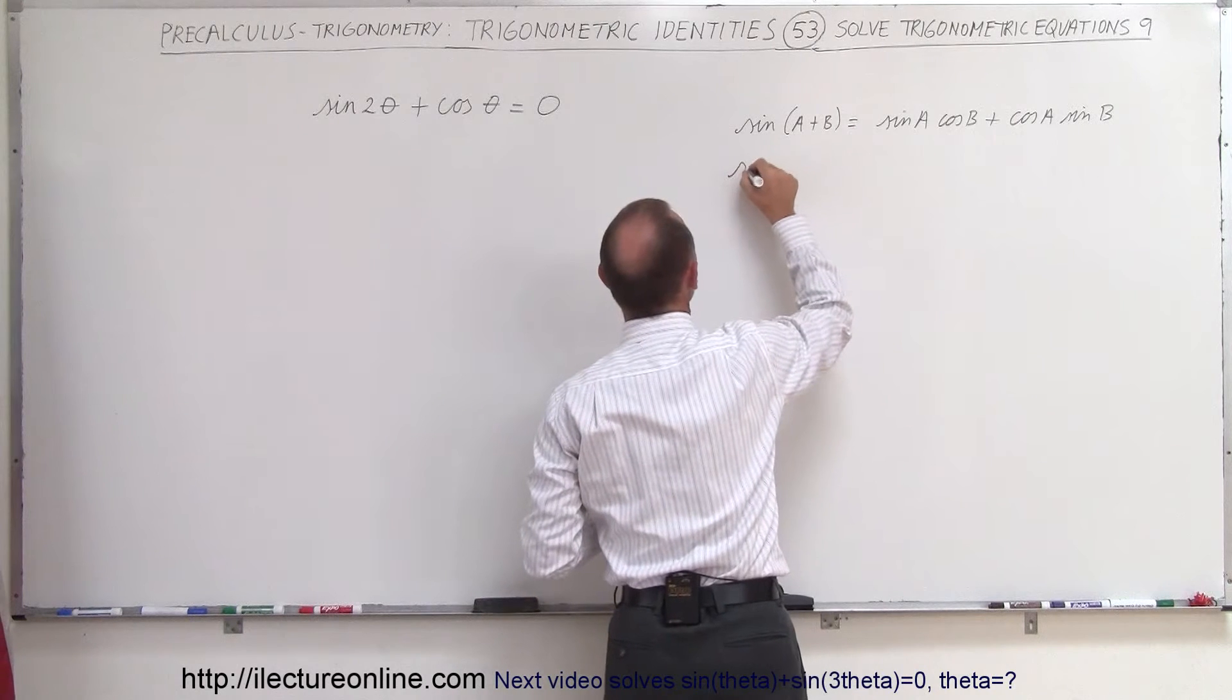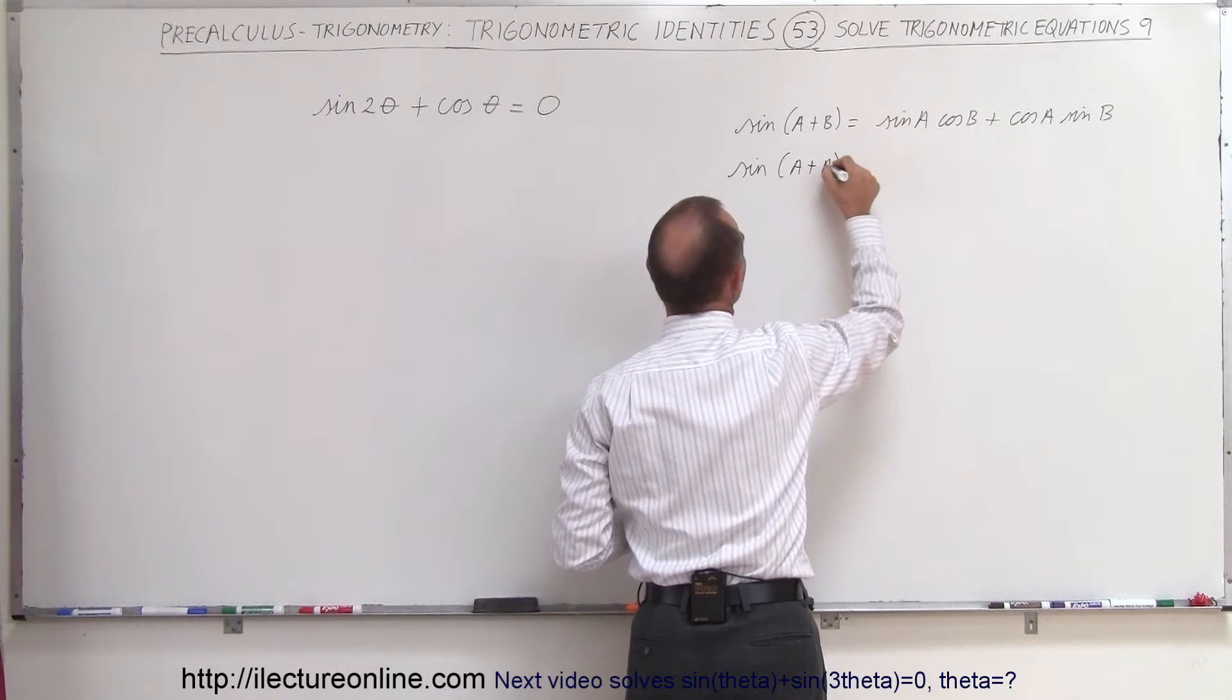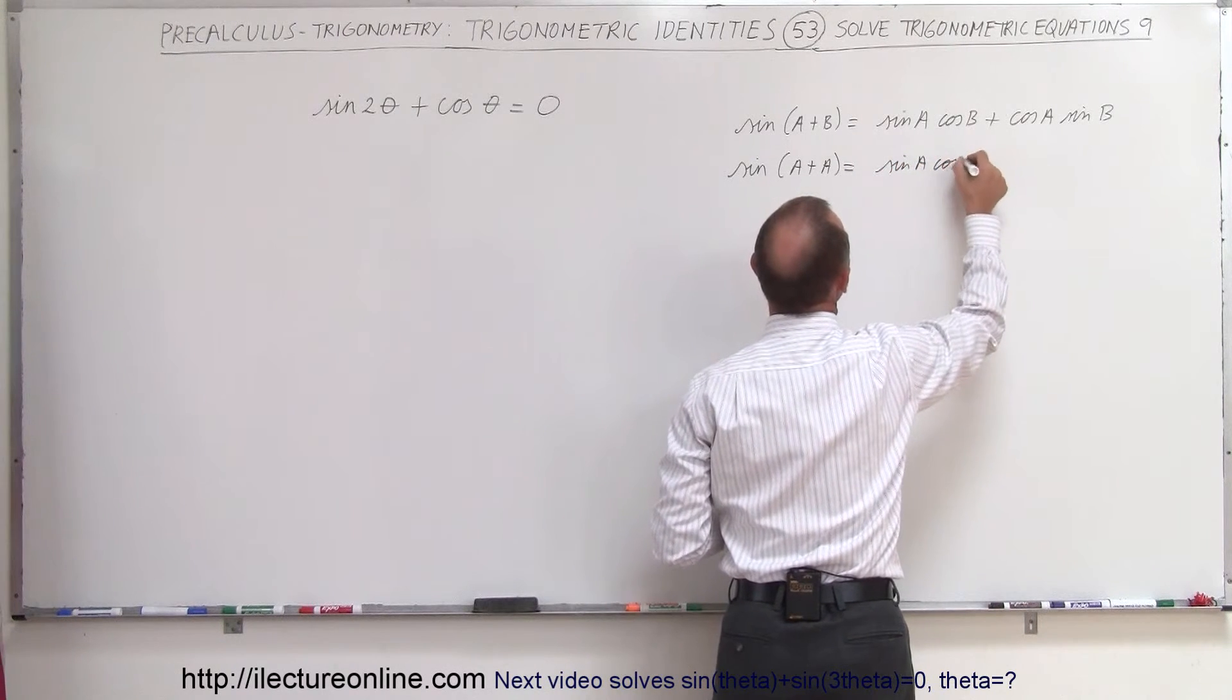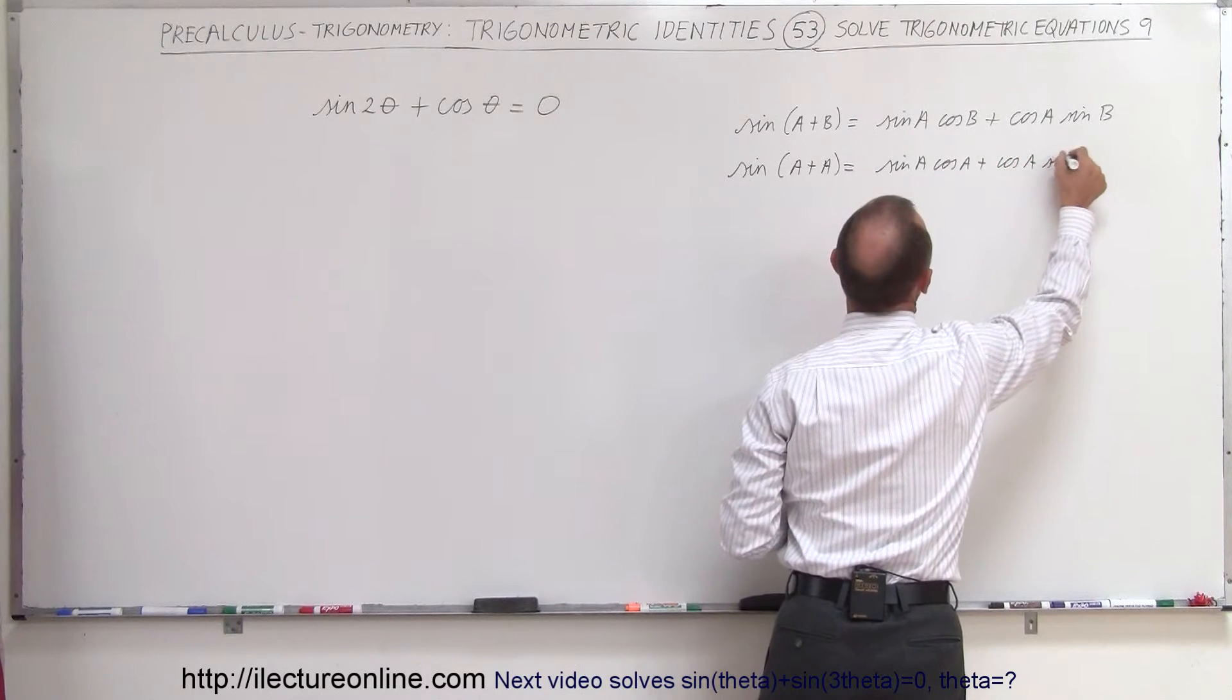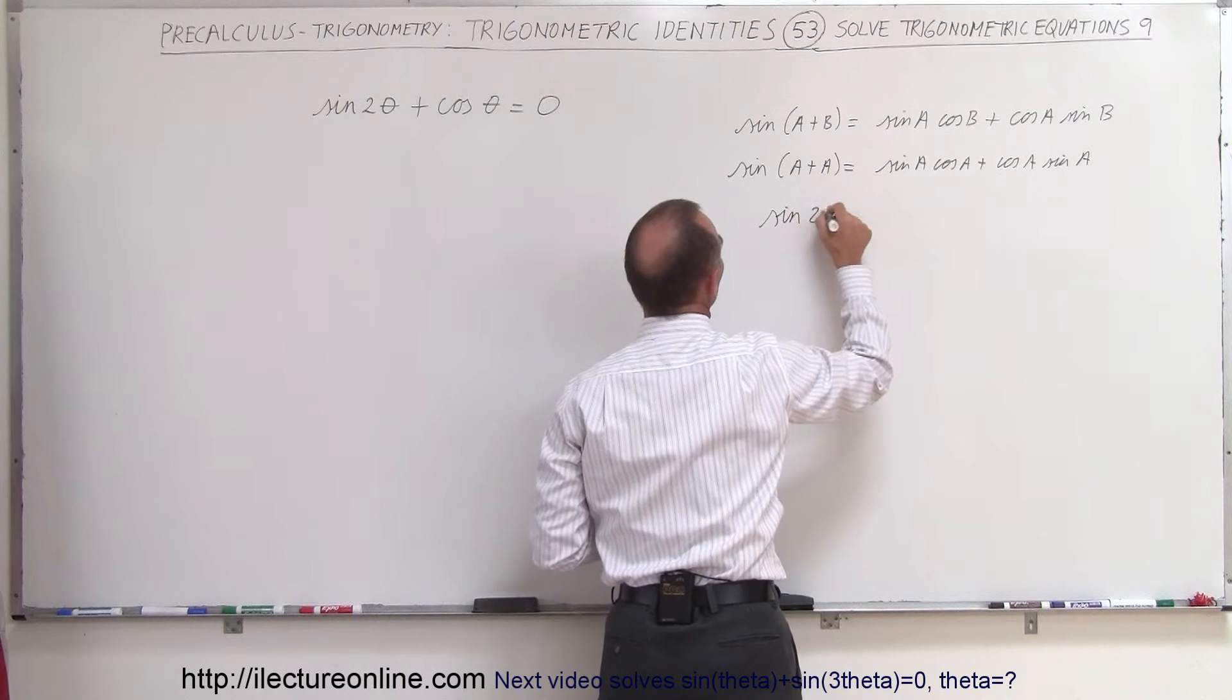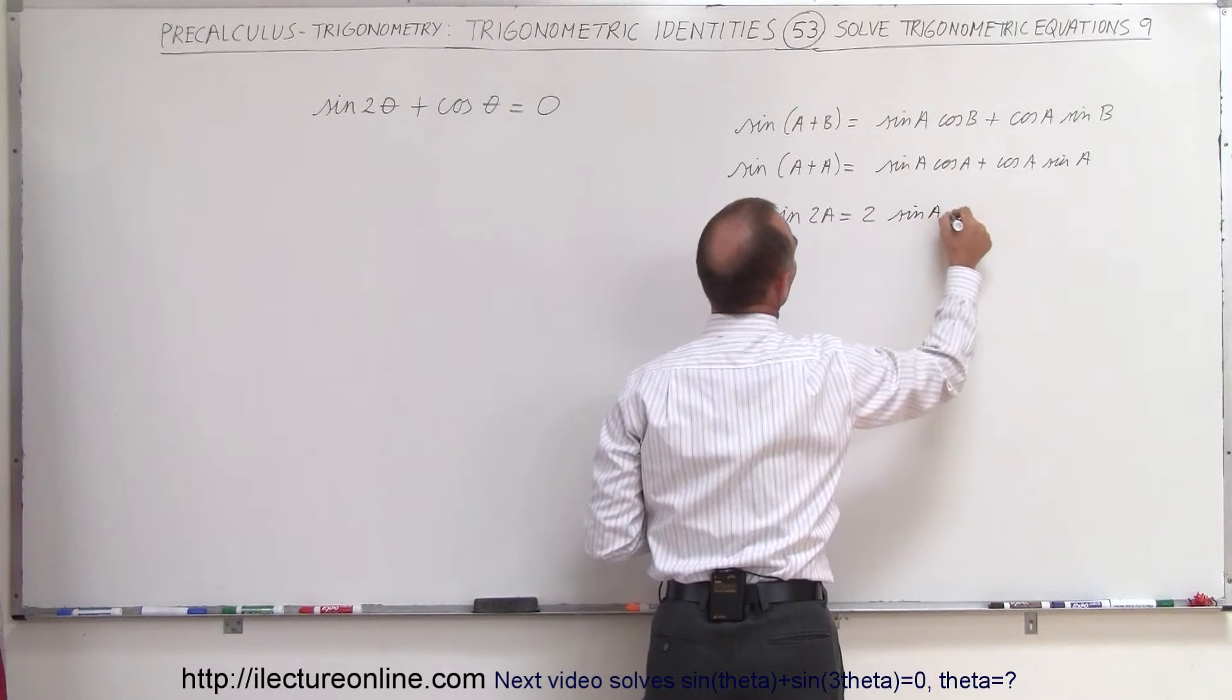And then if you have the double angle, for example sine of A plus A which is basically 2A, that is equal to the sine of A cosine of A plus the cosine of A sine of A. Notice that these are the same, so you can say that the sine of 2A is equal to 2 times the sine of A times the cosine of A.